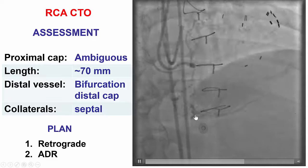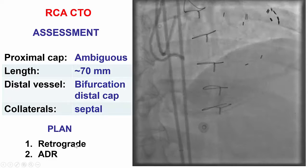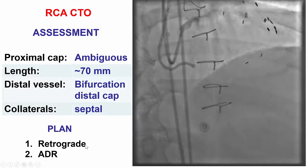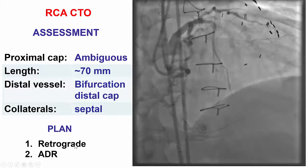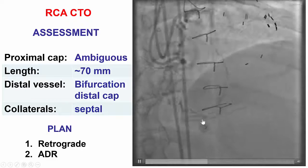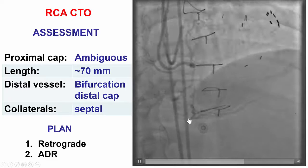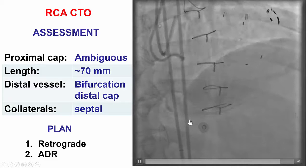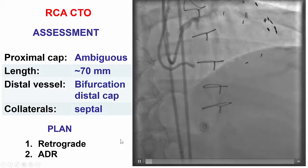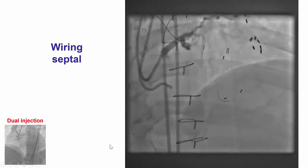Because of the proximal cap ambiguity, the long length, and the bifurcation of the distal cap, a decision was made to proceed with a primary retrograde approach to minimize the risk for losing the distal side branches if antegrade distal reentry was used.